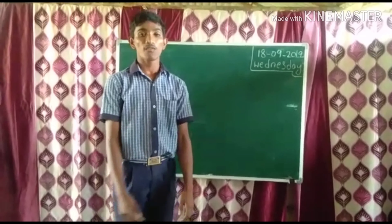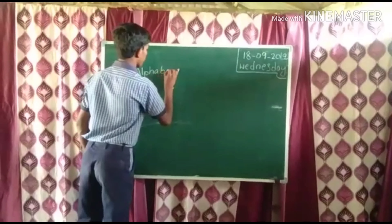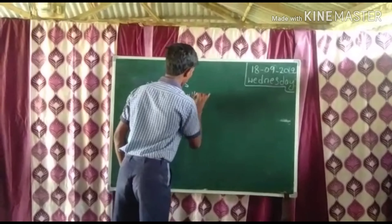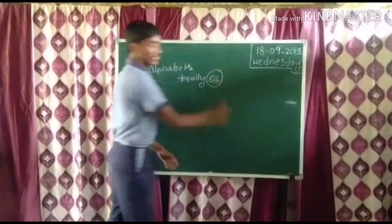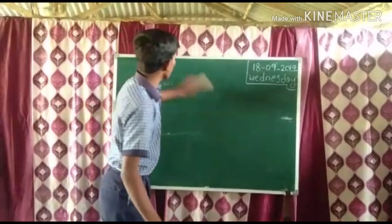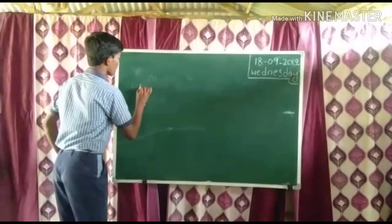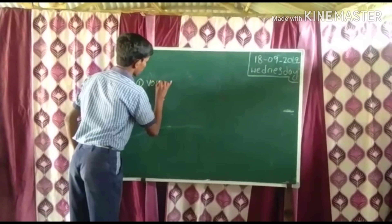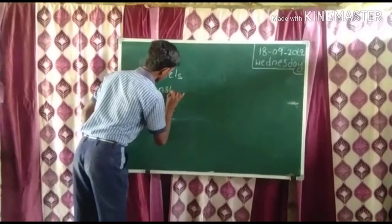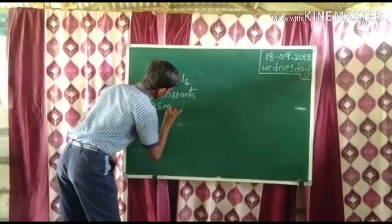Do you know all of you alphabets? Alphabets are totally 26. These 26 alphabets are divided into 3 parts. I am going to tell about 3 types of alphabets: first, vowels and consonants, and third one is semi-vowels.